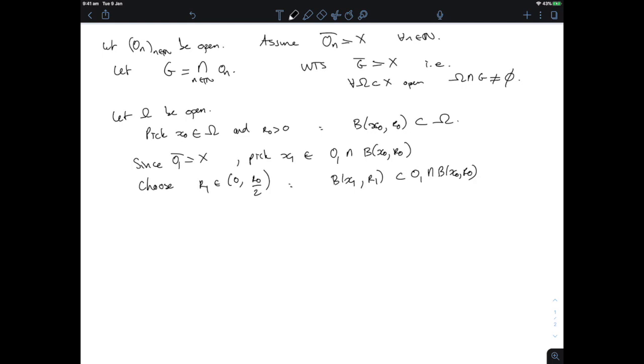That's possible because O₁ is open but then I can keep going, and you can take one even smaller to make sure that the entire closure of the ball, which will be included in the ball of double the radius, is in that intersection. So we can keep going and inductively choose a sequence of points xₙ and a sequence of radii rₙ.